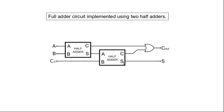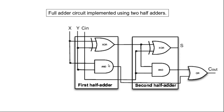The second half adder generates the sum output, and the sum output of the second half adder becomes the sum output of the complete circuit. To generate the carry out, we take the carry outputs of the two half adders and using an OR gate we produce the final carry out. This is the block diagram, and from the last class we know how a half adder looks like, so if we put the logic circuit of the half adder here it will complete the logic circuit for the full adder.